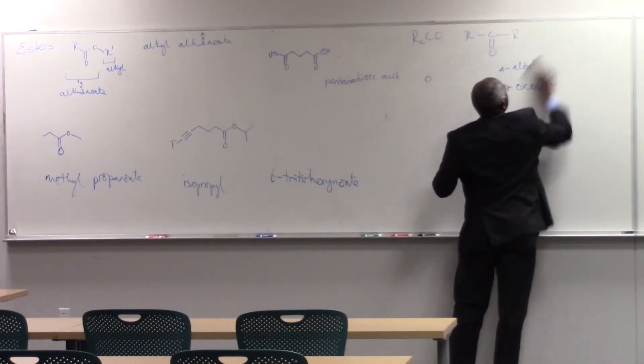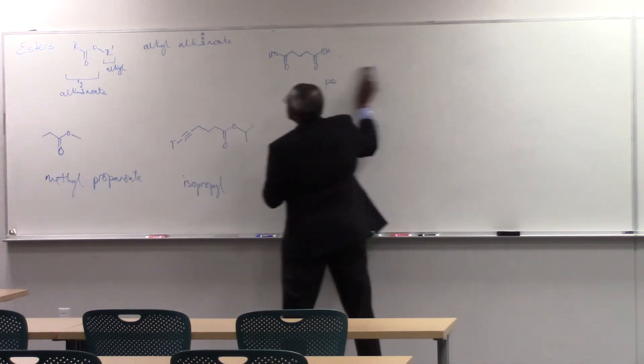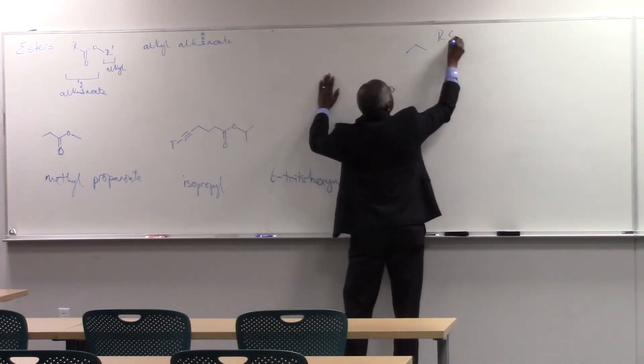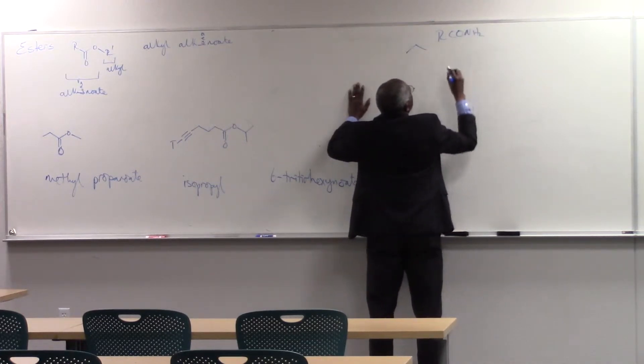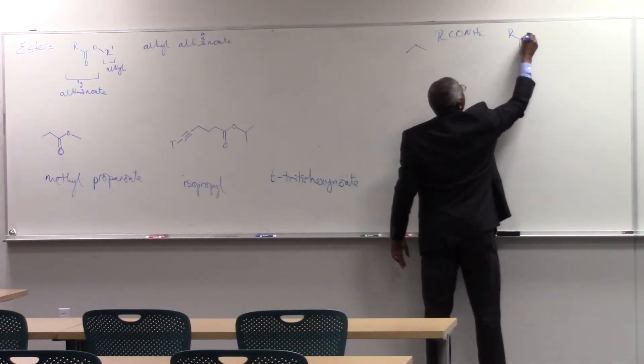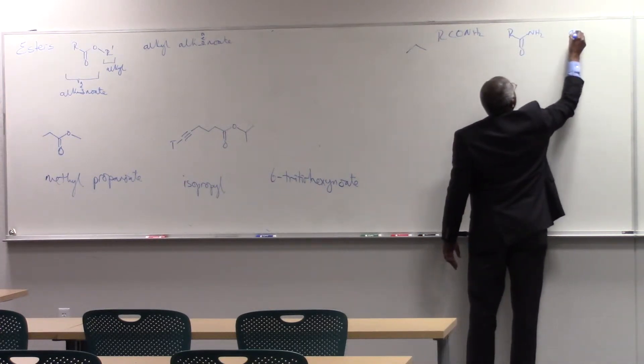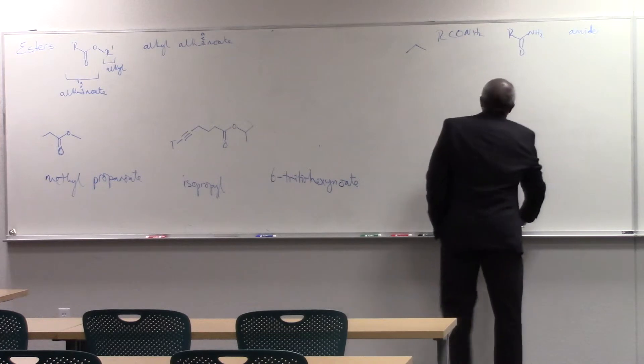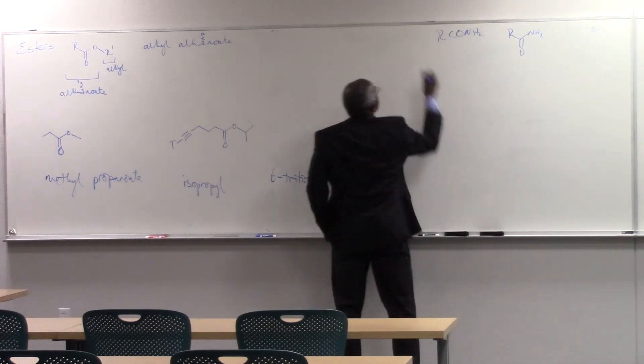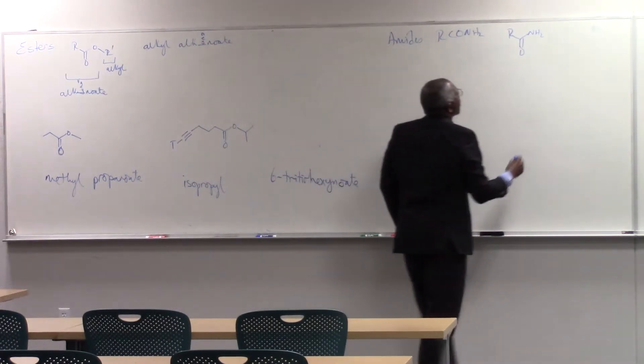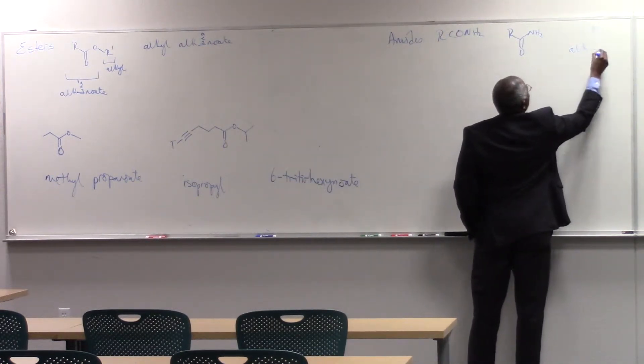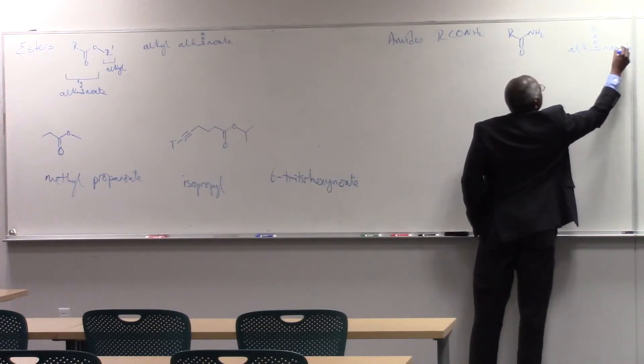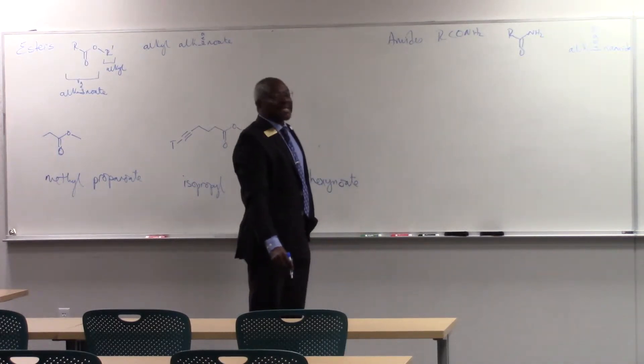And then there are R-CO-NH2. These are called amides. So amides. And they're called alkan. So A-E-Y. And amin. So it's an alkanamide, alkanamide, or alkanamide.